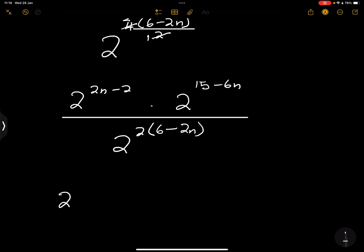So now all of my bases are 2. We can actually just apply the laws of exponents. So that's going to be 2n minus 2. Remember, bases are the same, I'm adding the exponents. That's plus 15 minus 6n.